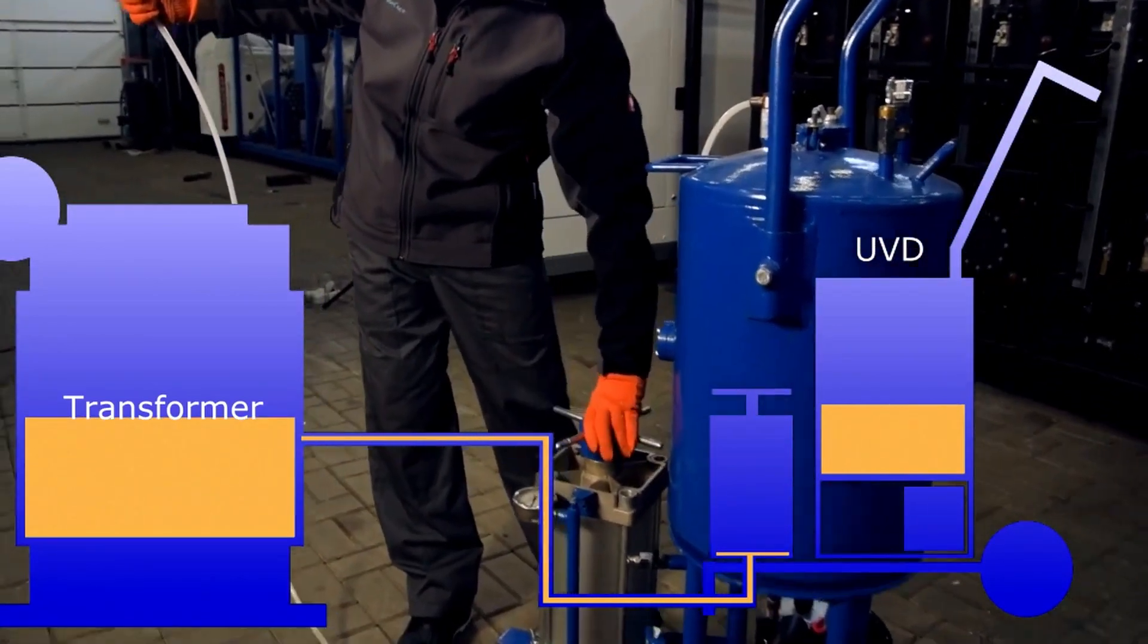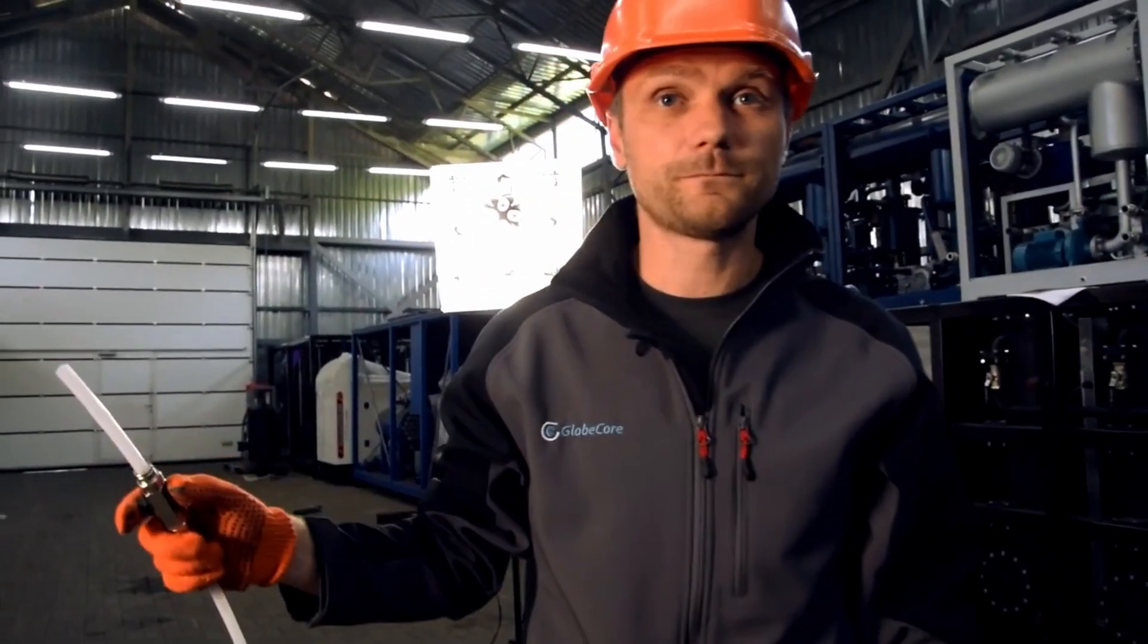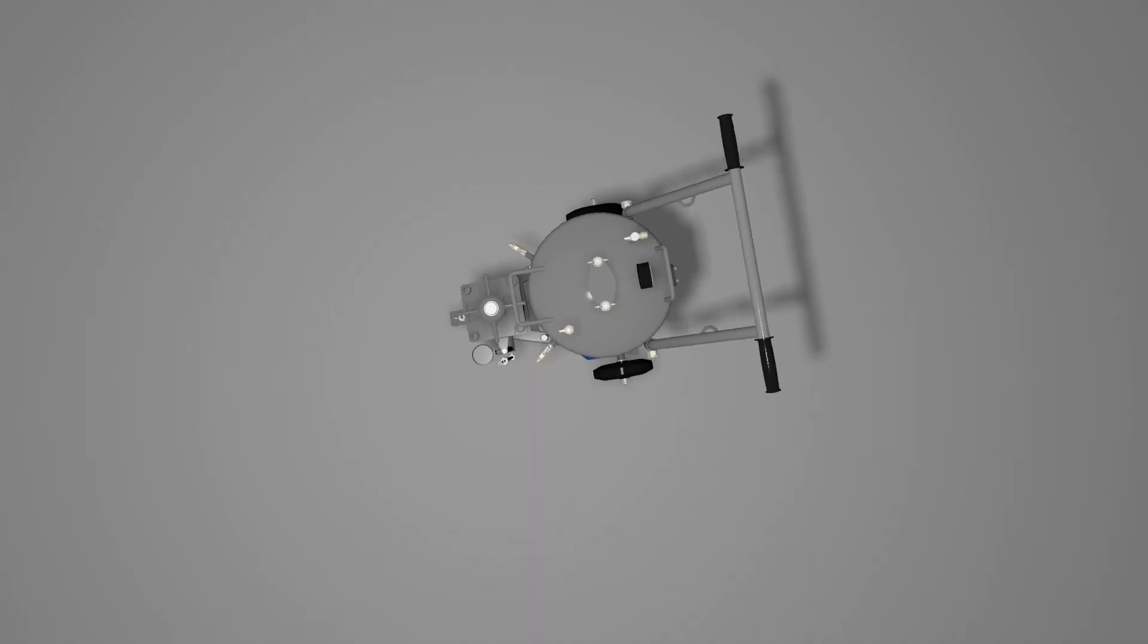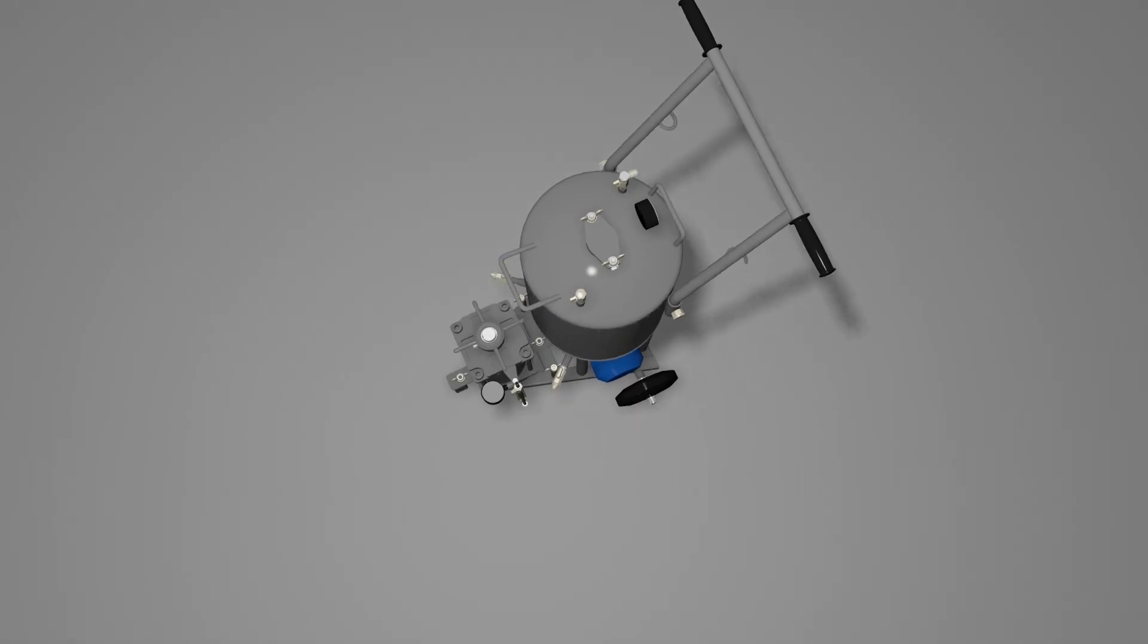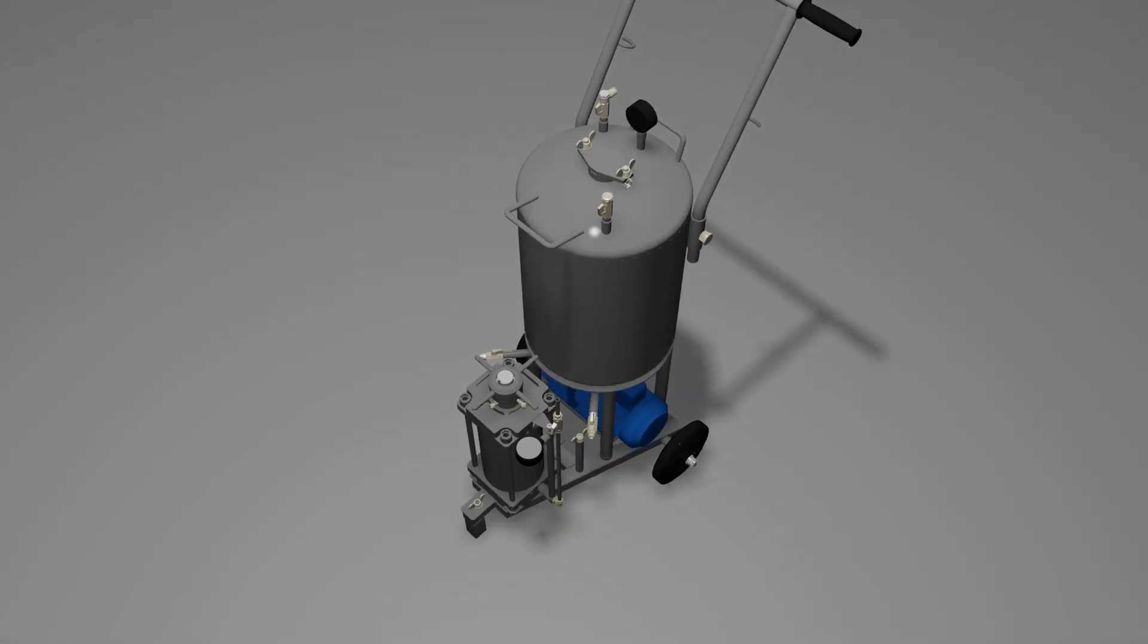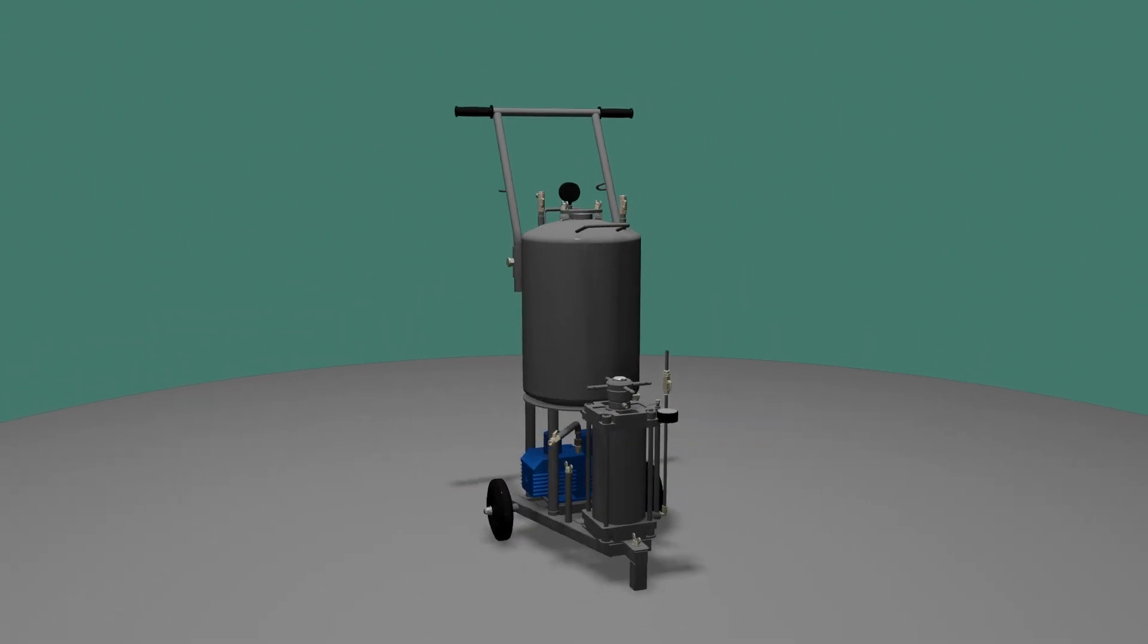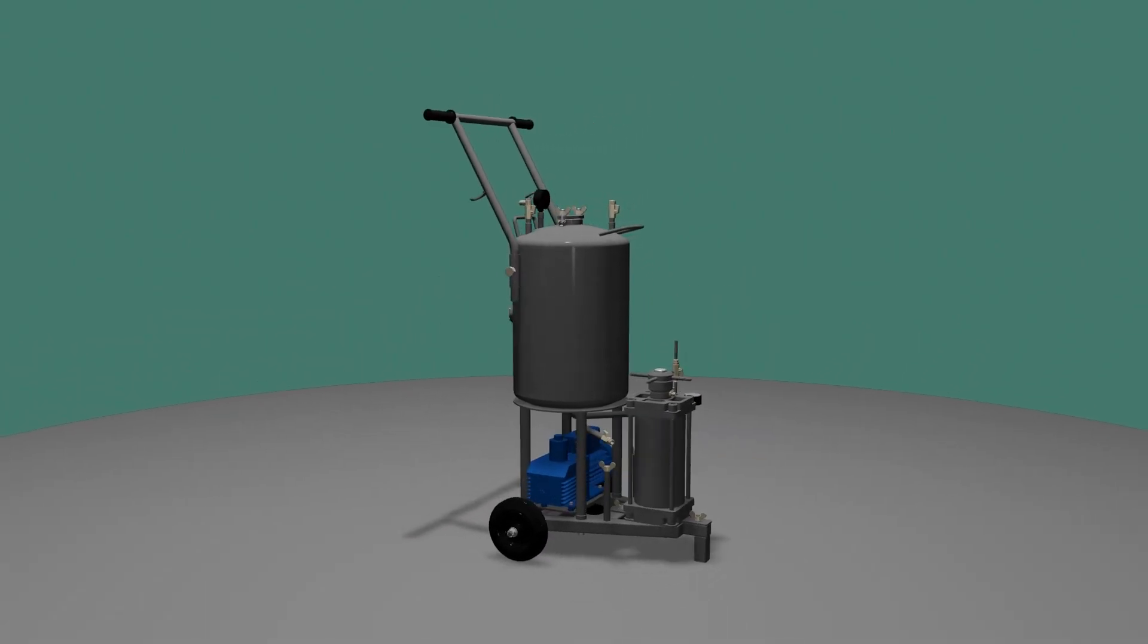As you can see, oil filling in high voltage bushings based on GlobeCore technology is quite easy. The UVD machines are designed to be practicable and as user-friendly as possible. Wheeled mounting allows the machine to be easily moved between transformers, which greatly facilitates the maintenance process.